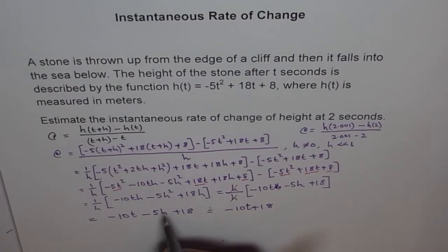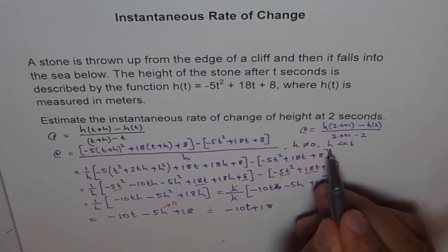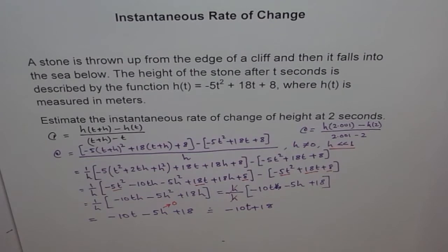10t + 18. So, approximation here is, I am thinking this as 0, approaching 0, I am not writing equal to 0, approaching 0 is negligible. We say, where h is very, very less as compared to 1. So, there it is. Now, this becomes a very, very general equation for us.